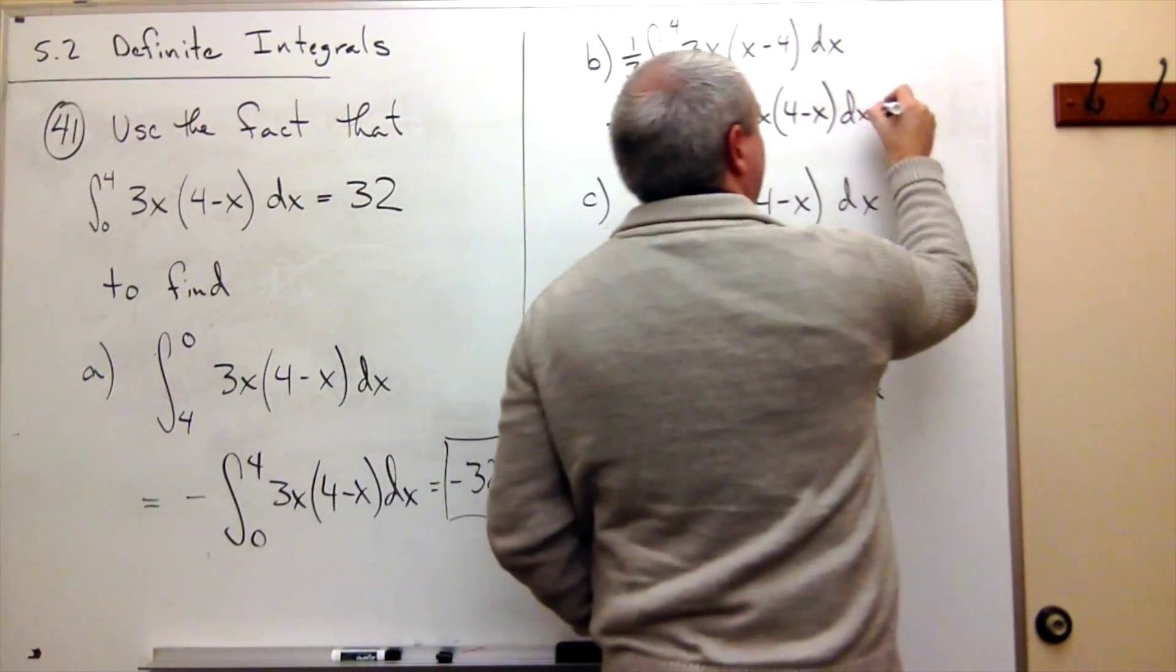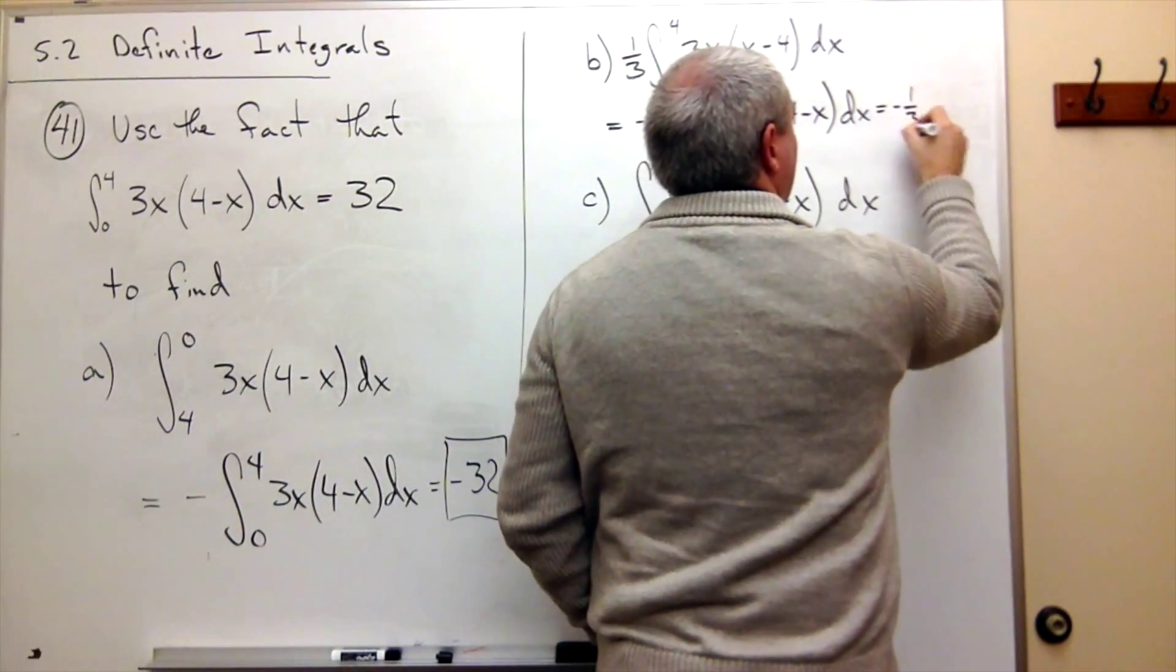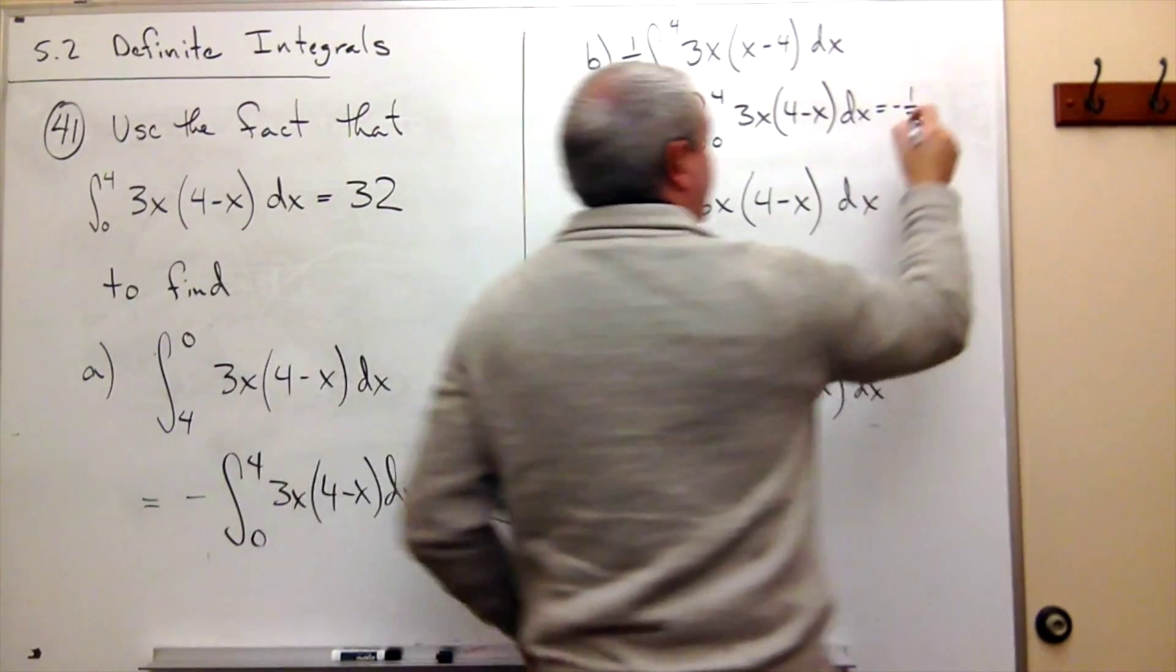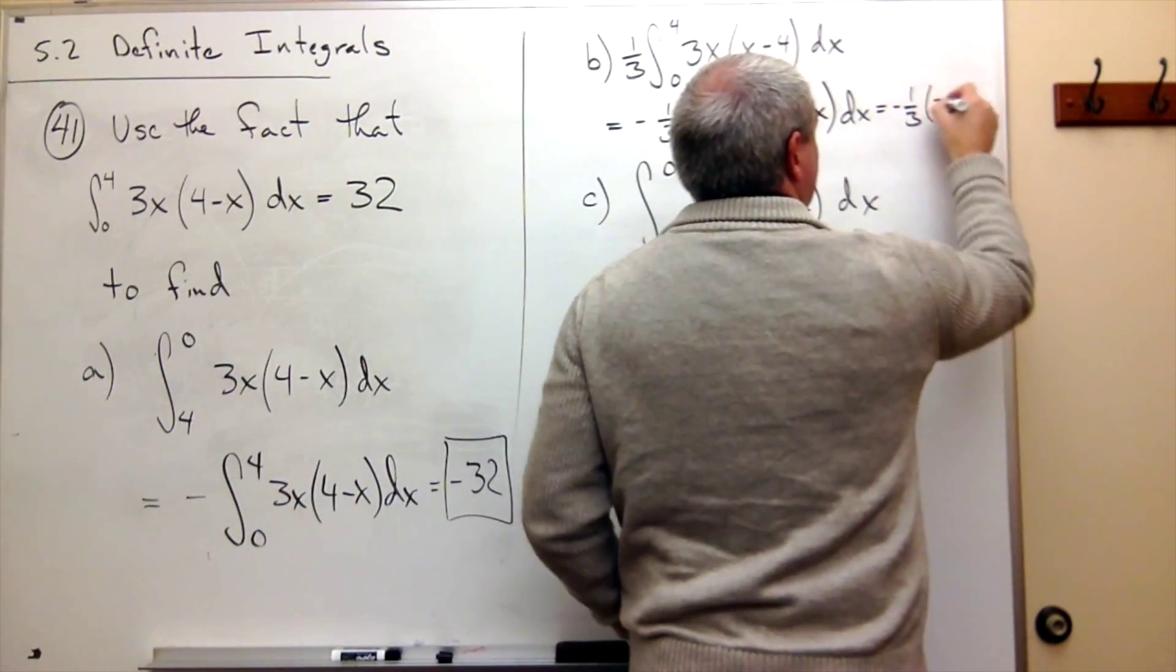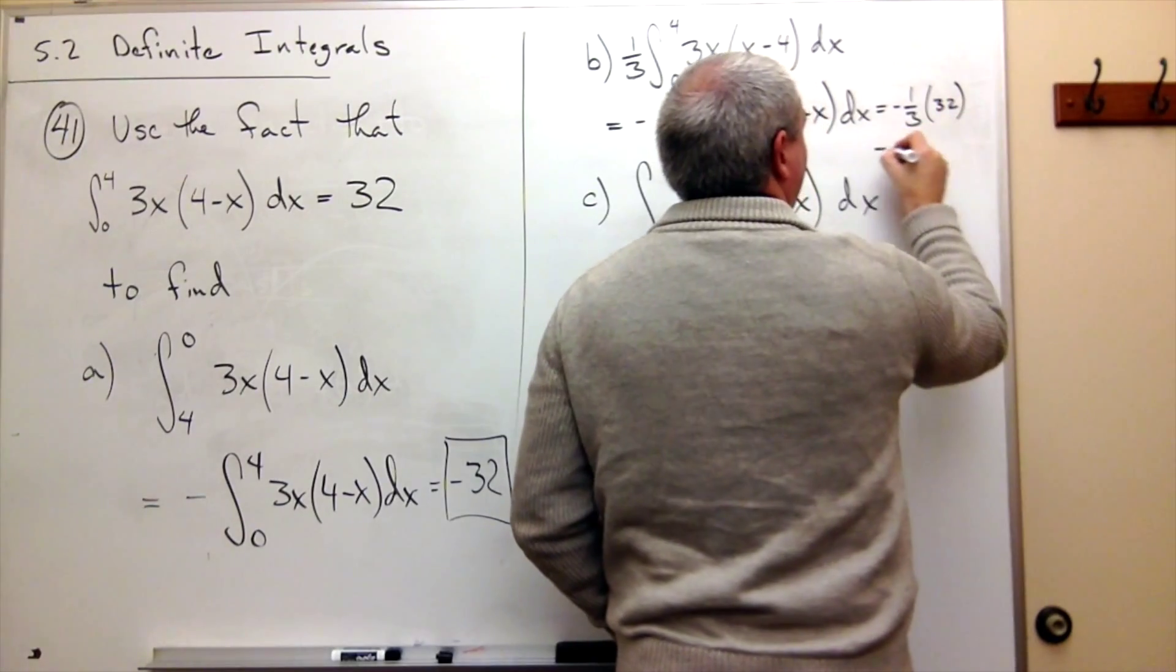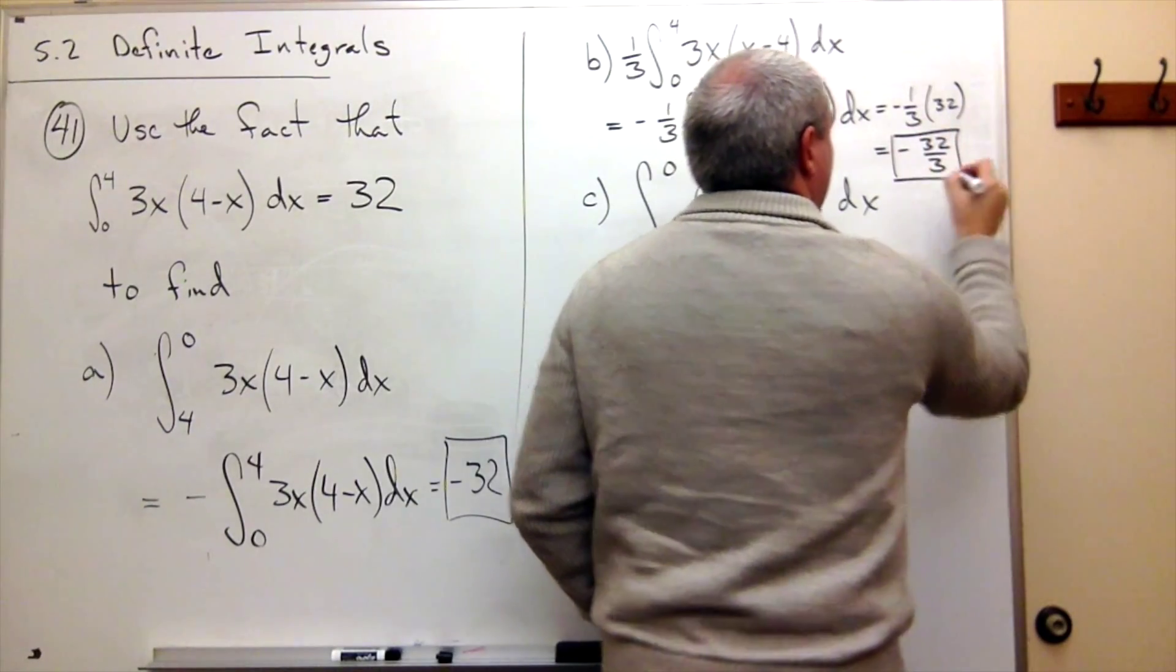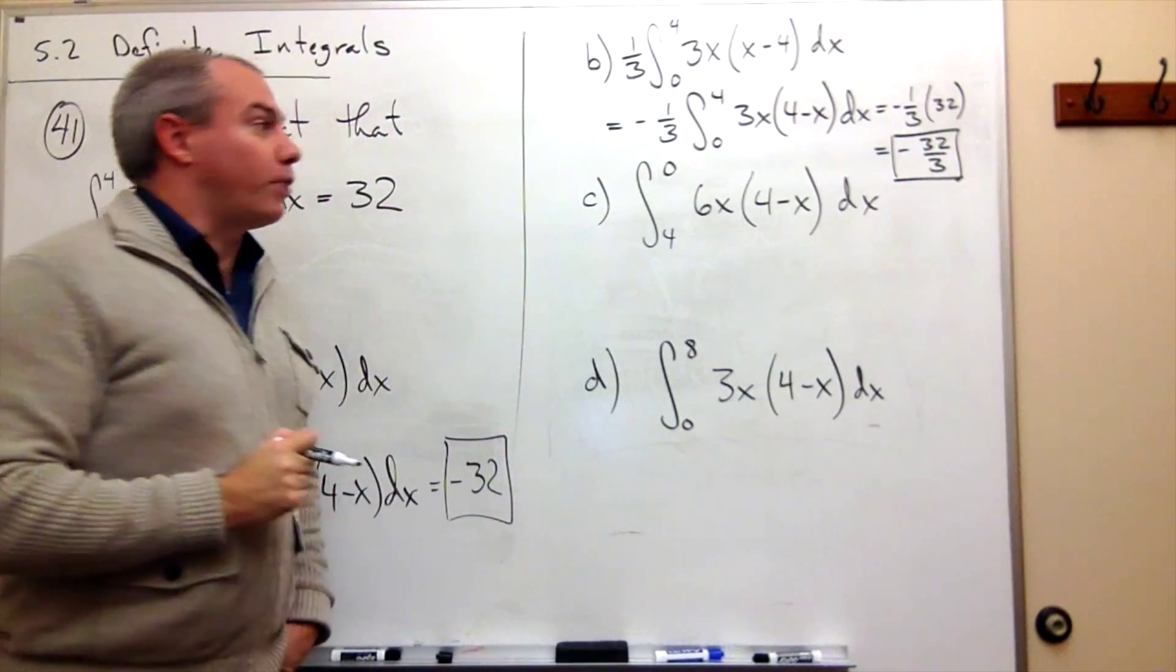So now what do we have? We have negative 1 third times an integral that I know. I know the answer is 32. So it's negative 1 third times 32. Or if you prefer, it's negative 32 thirds. And that's the answer to part b.